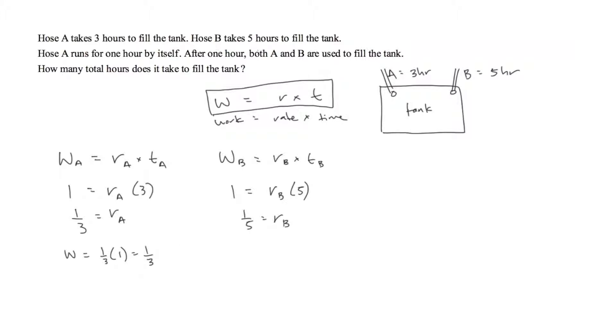Now after that 1 hour, both A and B are used to fill the tank. So now we can't do these separately. We need to figure out what the total RT is equal to. In this case it would be RA plus RB. Both of the hoses working at the same time. So the rate of A plus the rate of B, we get the lowest common denominator.